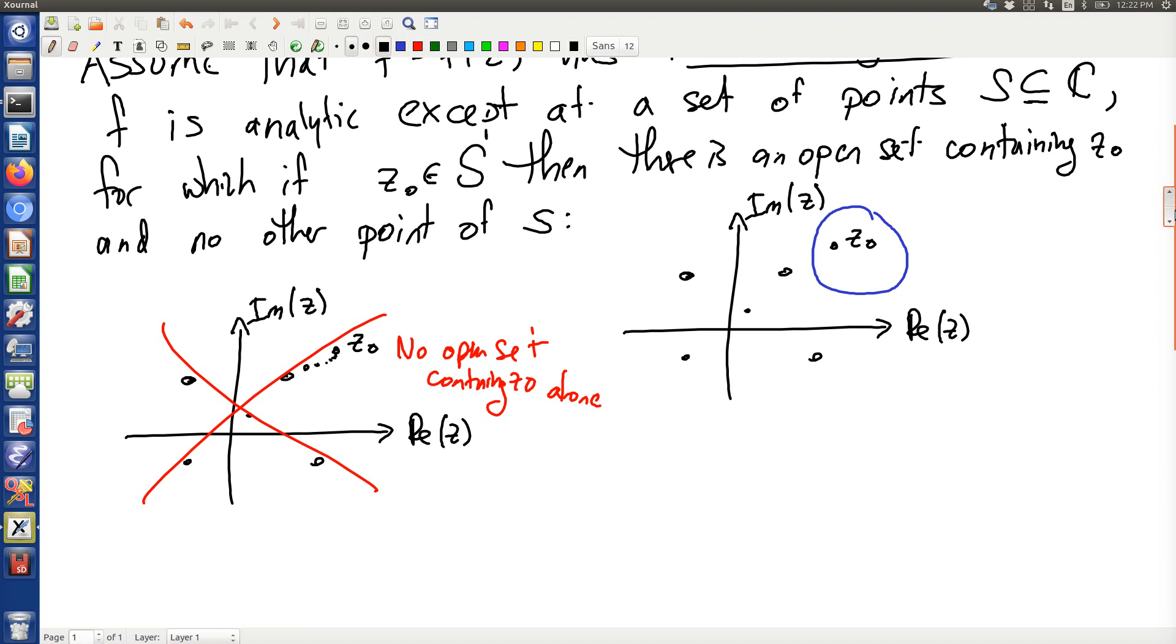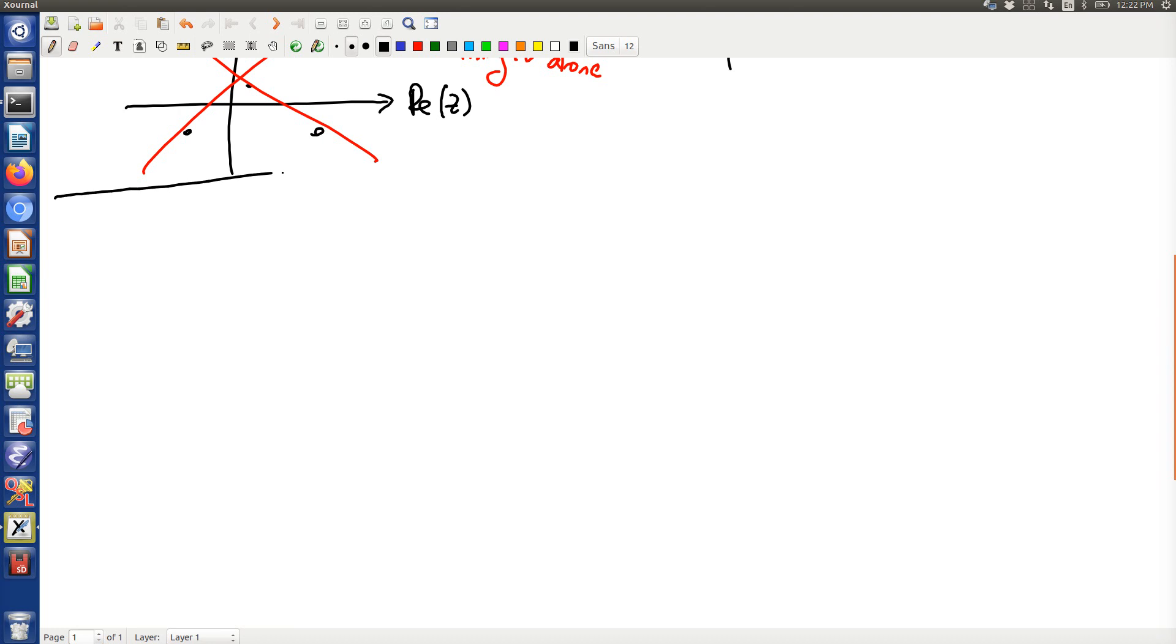With that ground rule aside, let me first give you a definition. If f of z₀ equals 0, then z₀ is called a zero of f.